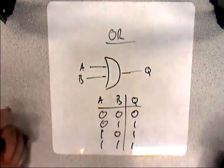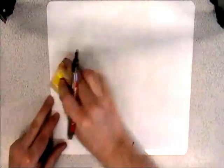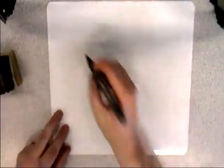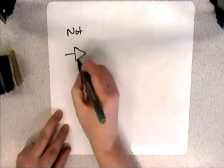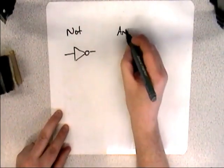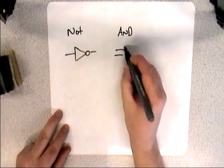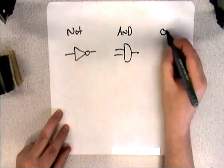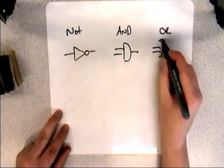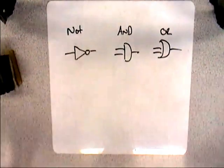And those are the only three that you need, certainly to GCSE level. A level you need a bit more, but GCSE level, if you can remember a NOT, an AND, and an OR, then you'll be okay.